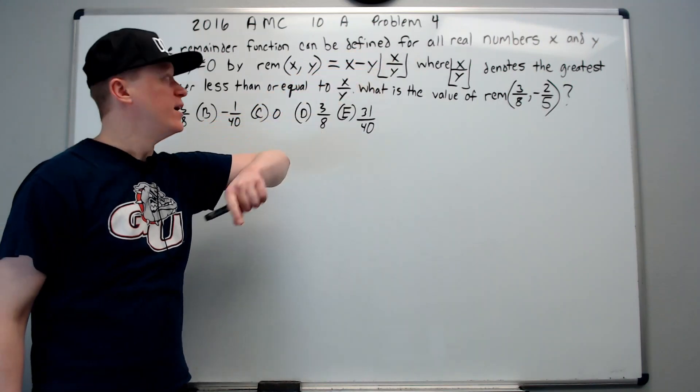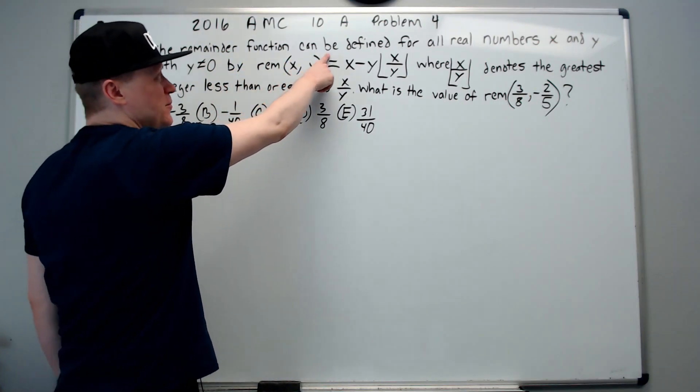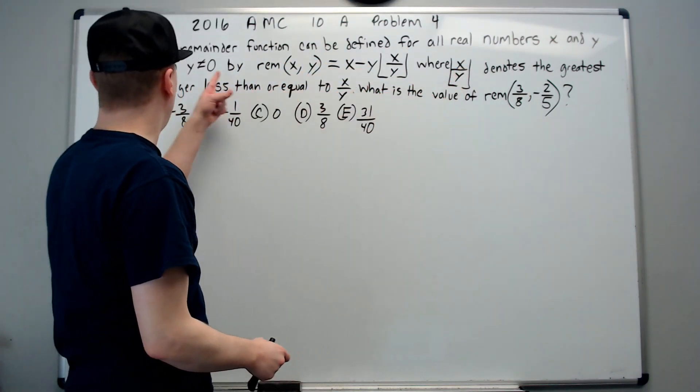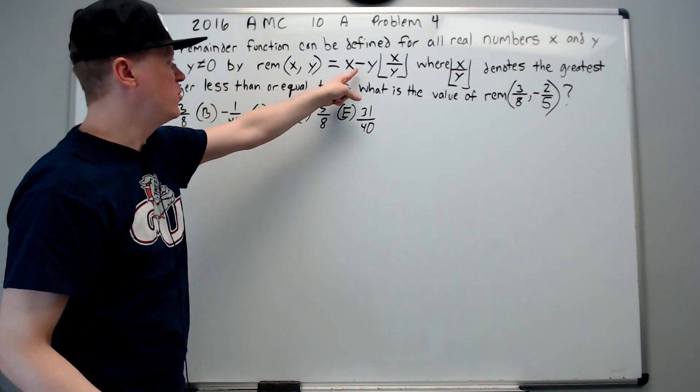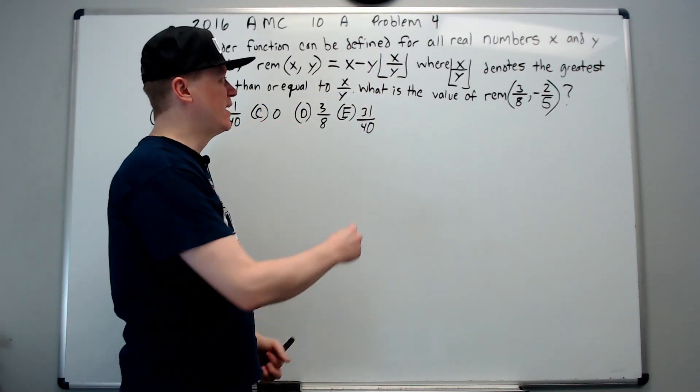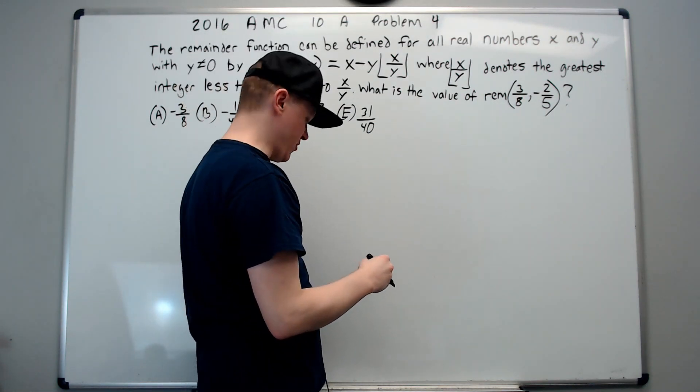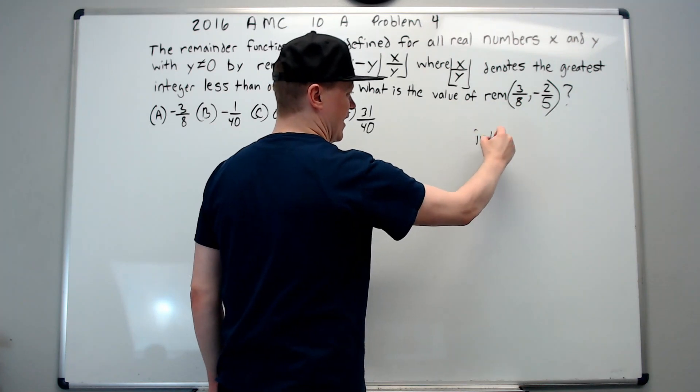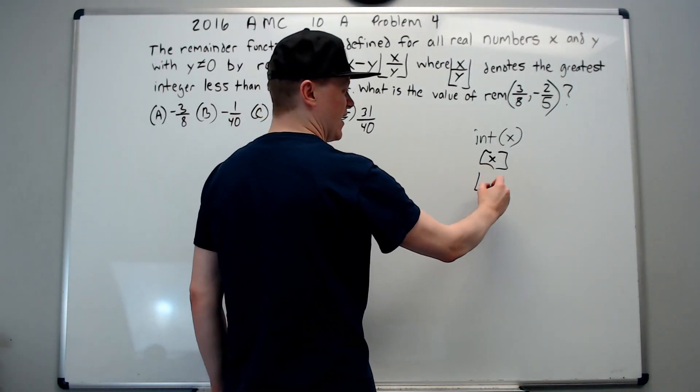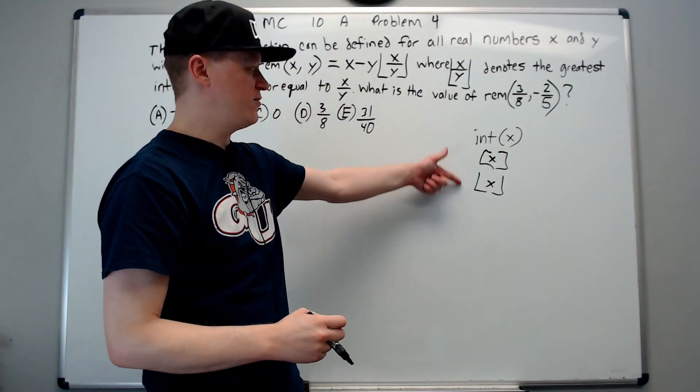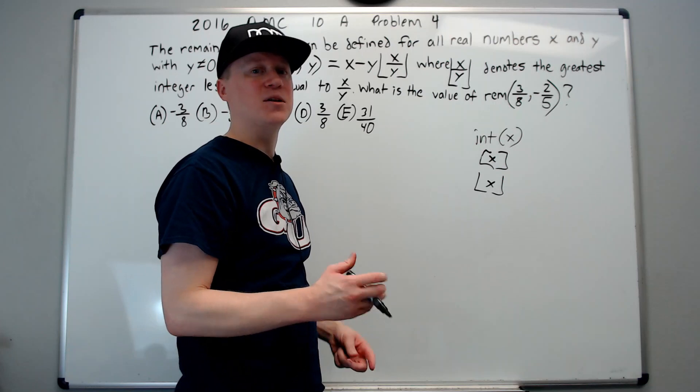On to problem number four of the 2016 AMC-10A. The remainder function can be defined for all real numbers X and Y with Y not equal to zero by remainder X, Y equals X minus Y times this expression. This is the floor function, also called greatest integer function. It has a few other notations. One of them is like int of X. Another one is a bracket. You'll see sometimes in textbooks. And it's also called the floor function.